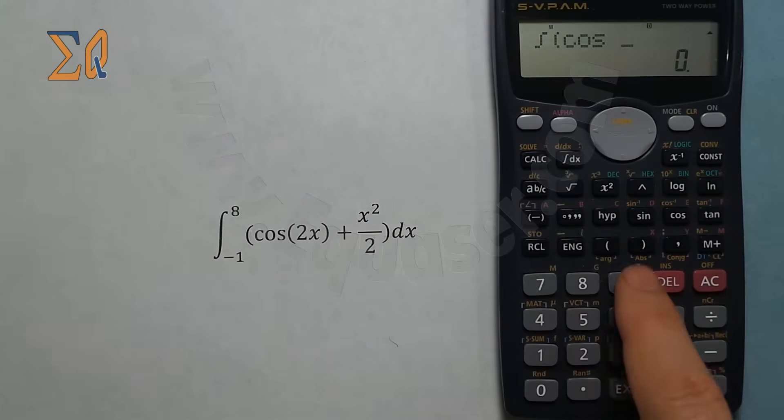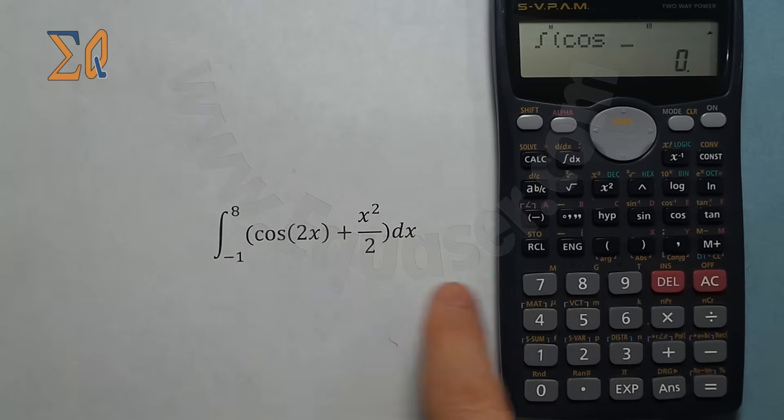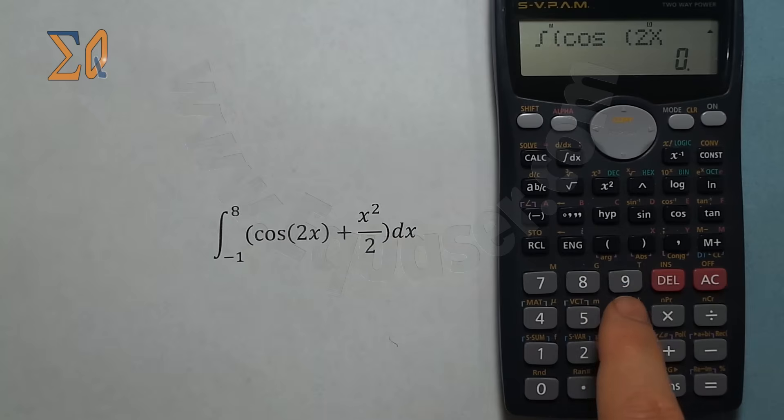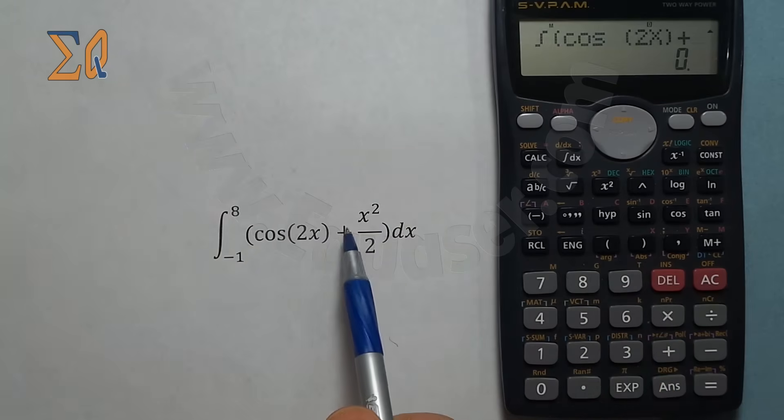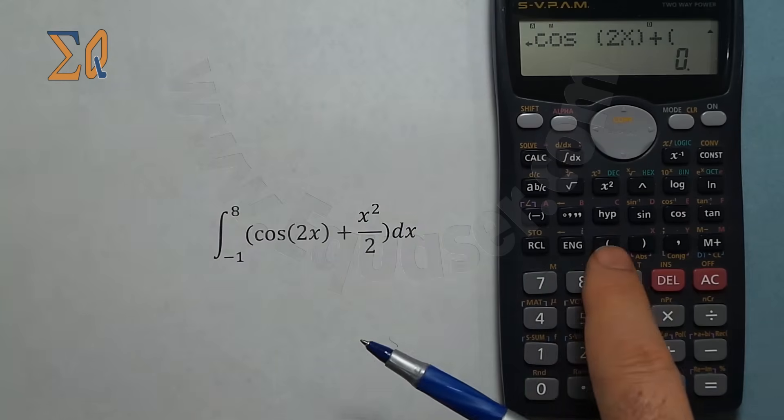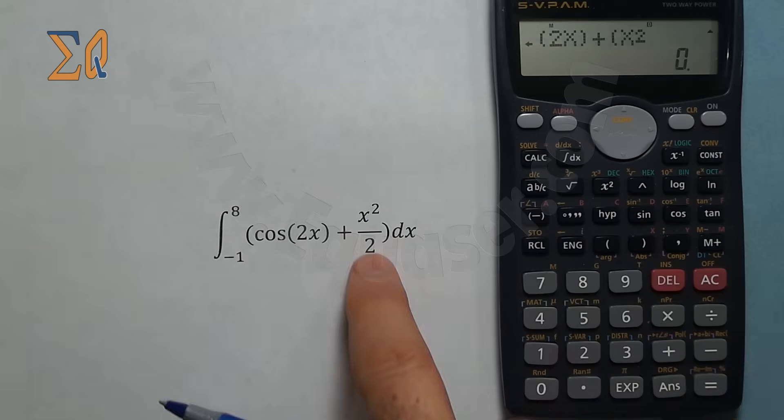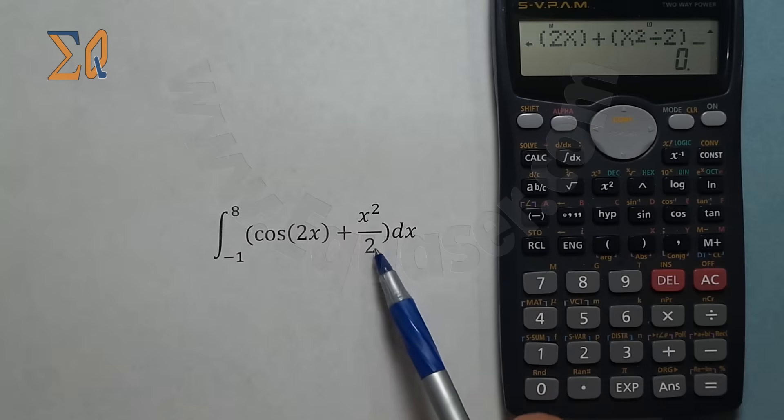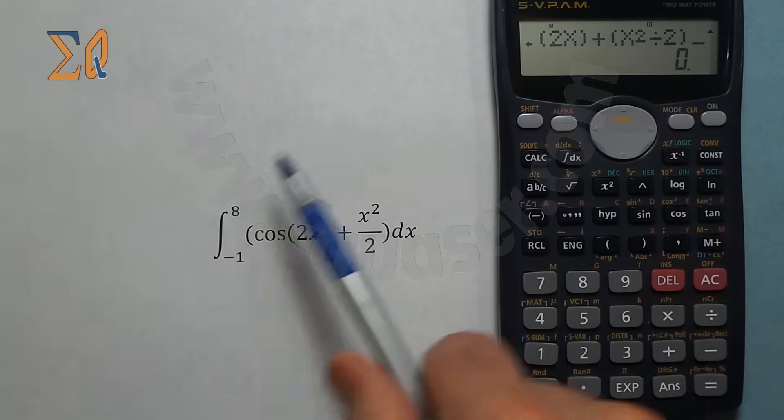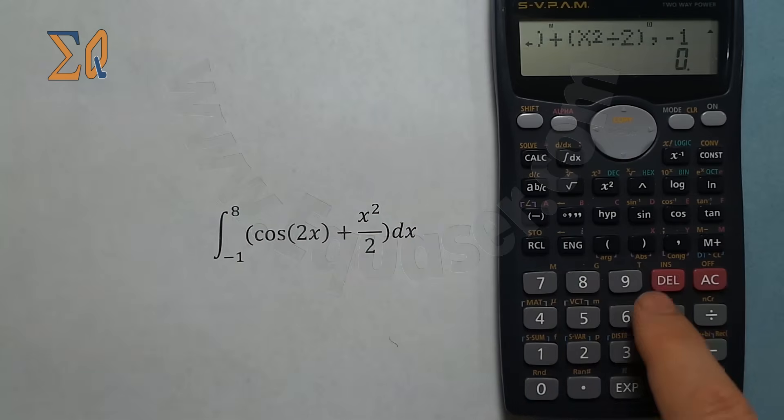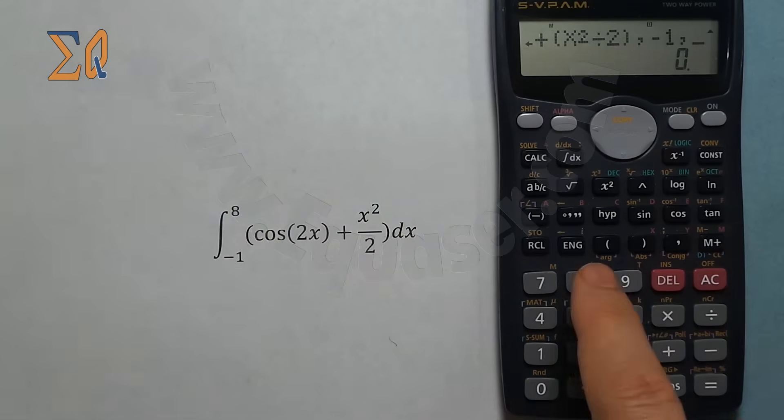I press cos, open another parenthesis, 2, then alpha and x, close that, plus another parenthesis, then x squared divided by 2, close that. Now for the bounds, after this put comma -1, then put comma 8.